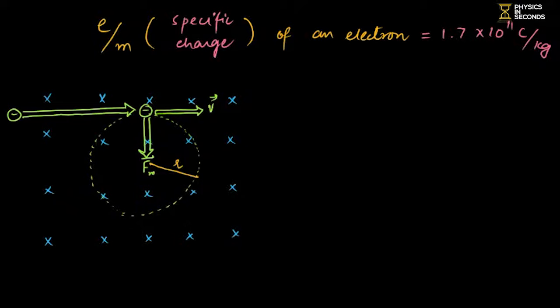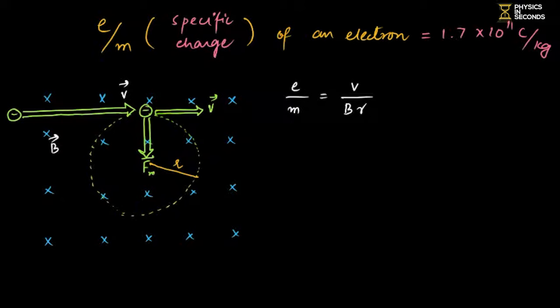The relation used in the Charge to Mass Ratio calculation is written in two forms. In the velocity form it is written as: e/m = v / (BR), where v is the projection velocity, B is the magnetic field, and R is the radius of the path. If all three are known, Charge to Mass Ratio can be calculated.